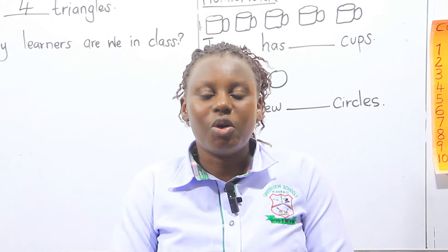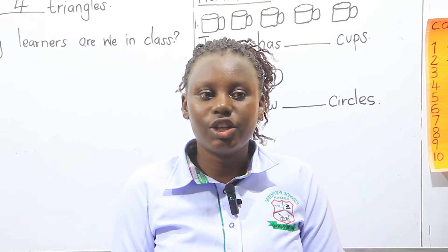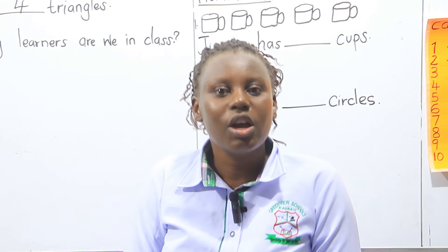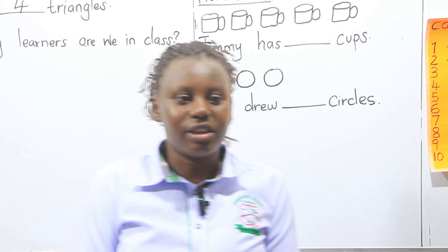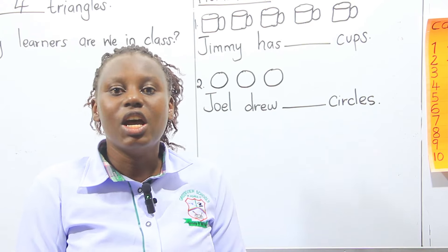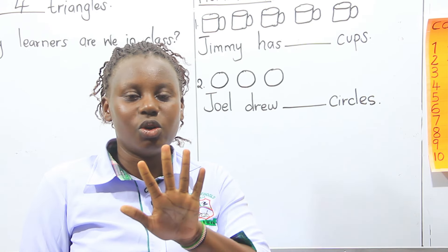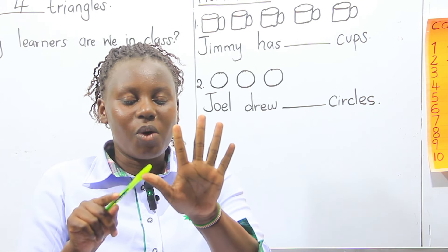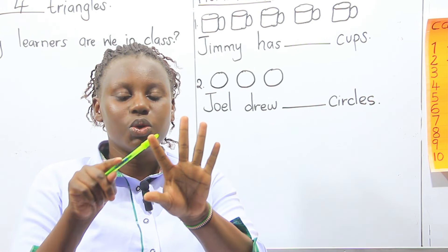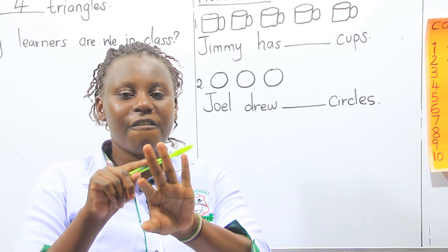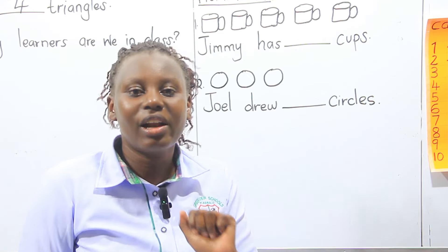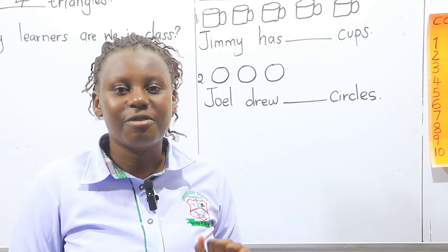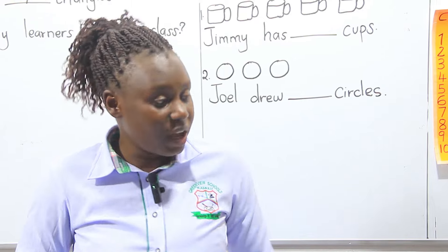At your home, you can count how many chickens do you have. You give me the answer when we come back. You can also count your fingers: one, two, three, four, five. One hand has five fingers.